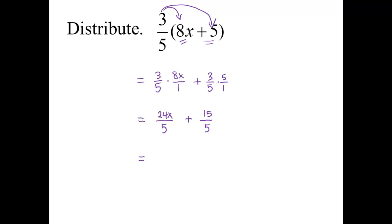Is there any more simplification? Not in the first fraction. 24 fifths does not simplify, so we still have 24x divided by 5. But 15 fifths is equivalent to 15 divided by 5, which is 3.